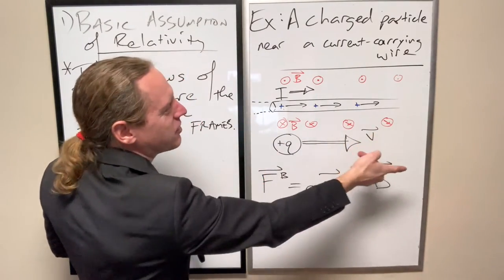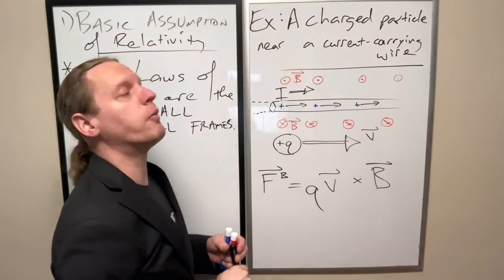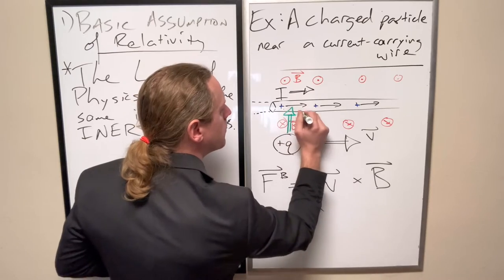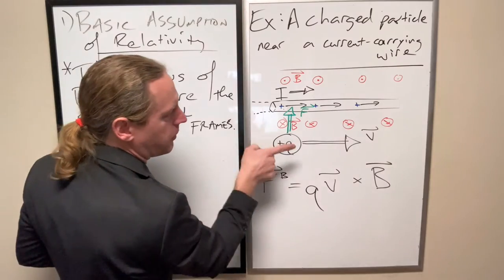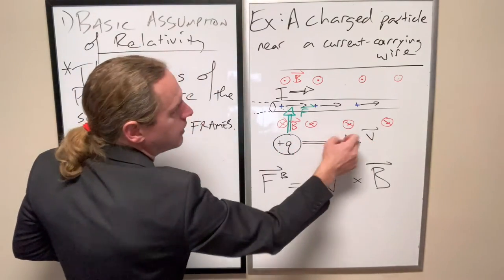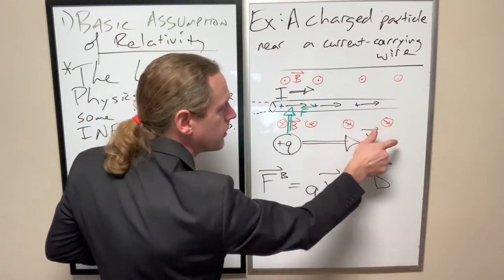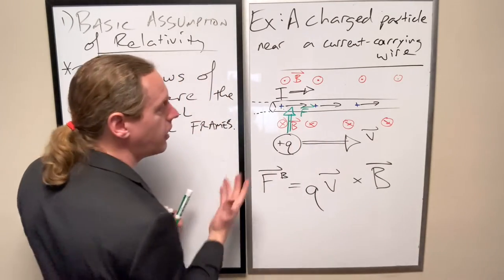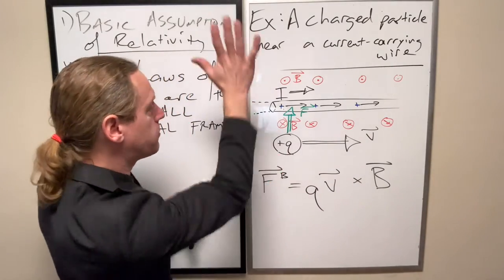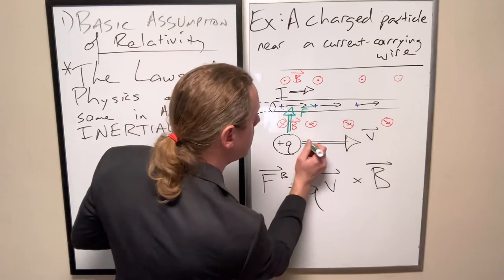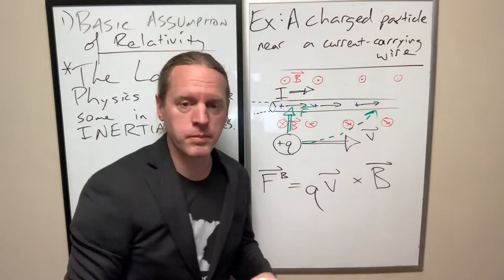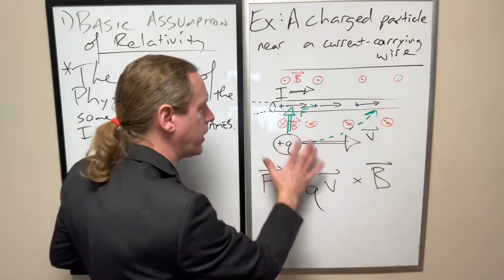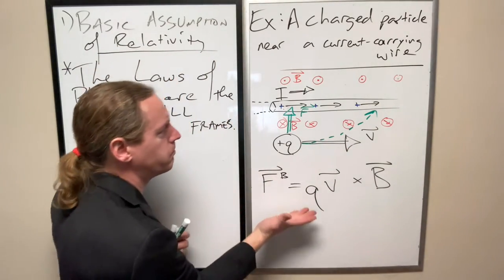We take V going to the right, cross it with B going down into the board - the force is going to point upwards. I'll draw that in green. It has a rightwards velocity, but it's going to experience an upwards force. The velocity is in the i-hat direction, the magnetic field strength is in the negative z-hat direction, and the resulting force points in the y-hat direction. Because the laws of physics predict that you should experience an upwards force, this particle should actually experience that force until it collides with the wire. So we have a very definite prediction on what should happen if you do this.